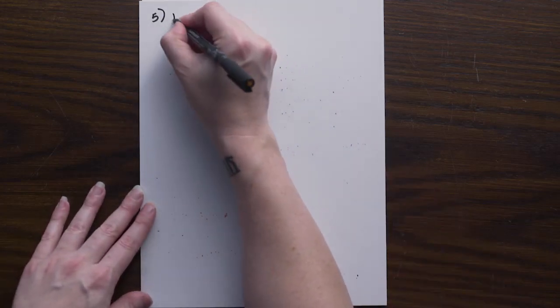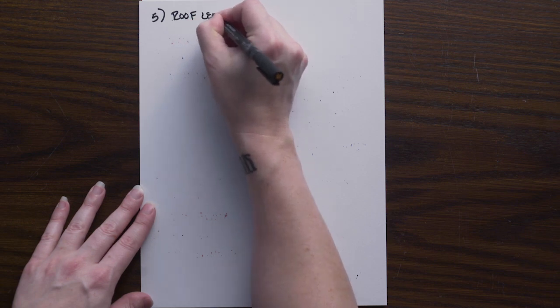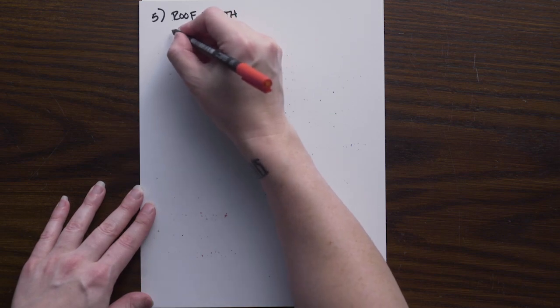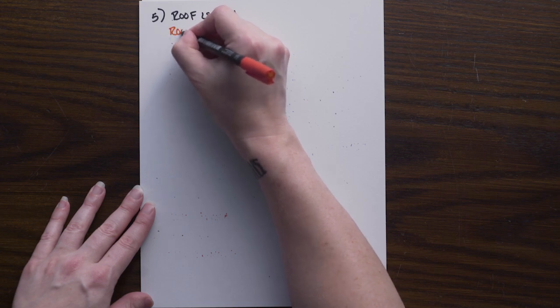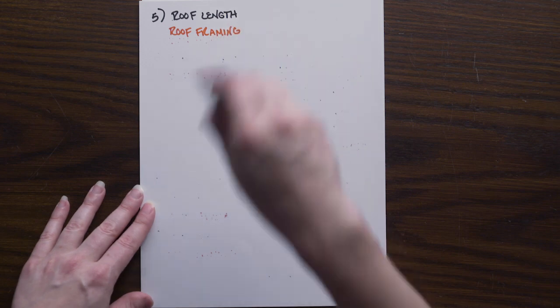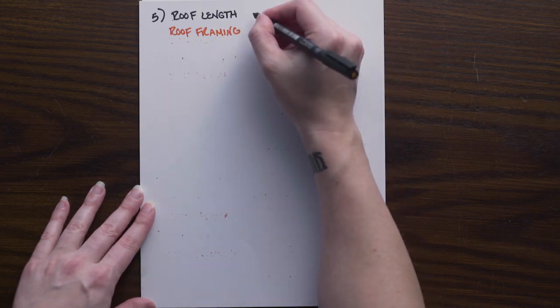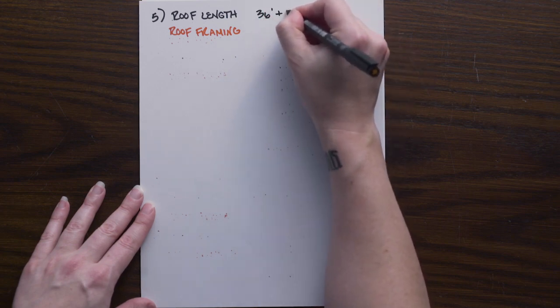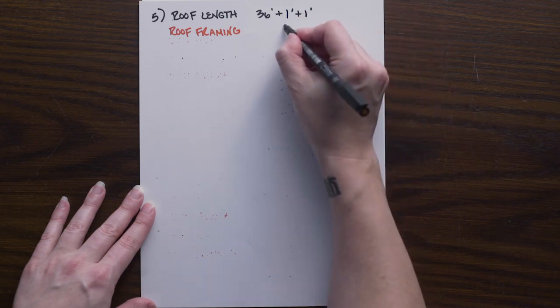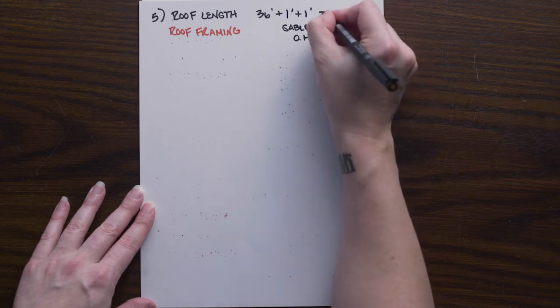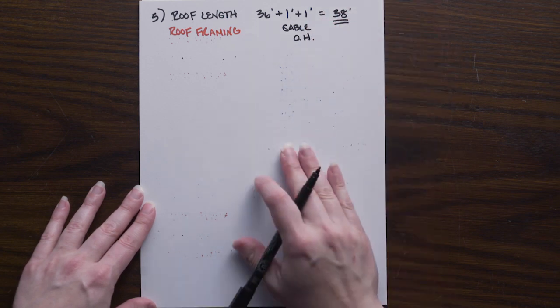Number five, we're looking at our roof length. We needed this to help some of our other calculations, but where this comes into play initially is our roof framing sample problem. So you can review back to that for the drawings and more depth if needed. It is simply the 36 foot length of our house plus the one foot gable overhangs. Remember, it's the gable overhangs at this point, not the main overhang. So we have 38 feet as our roof length.